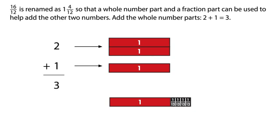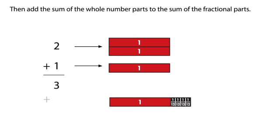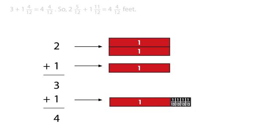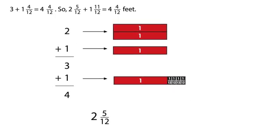Add the whole number parts: two plus one equals three. Then add the sum of the whole number parts to the sum of the fractional parts. Three plus one and four twelfths equals four and four twelfths. So two and five twelfths plus one and eleven twelfths equals four and four twelfths feet.